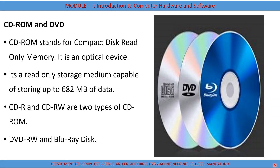CD-ROM has a storage capacity of around 682 MB. There are other versions: CD-R which is recordable, and CD-RW which is re-writable, where you can erase the contents using laser technology and then burn new data onto it. We also have DVD — Digital Video Disk or Digital Versatile Disk — which has an extremely high storage capacity compared to CD-ROM, ranging from around 4.7 GB to around 17 GB.